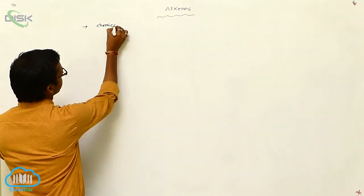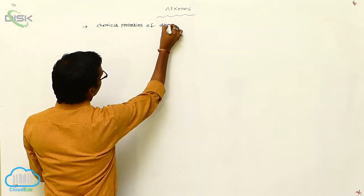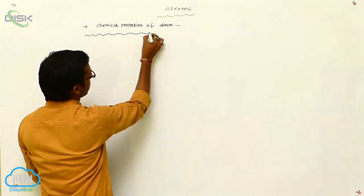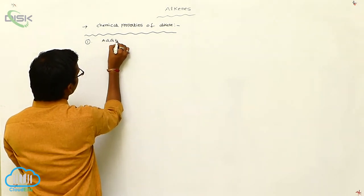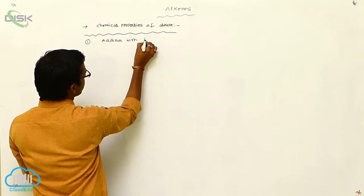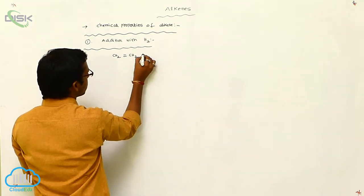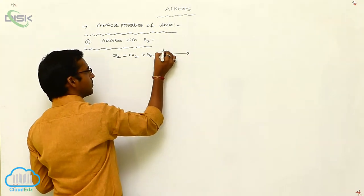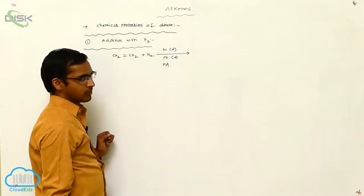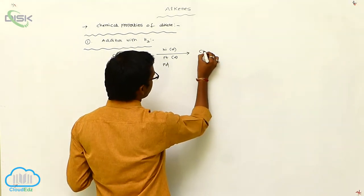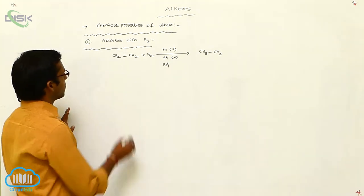Chemical properties of alkene. First one: addition with hydrogen. CH₂=CH₂ reacted with hydrogen in presence of nickel, platinum, or palladium catalysts. This unsaturated compound with a double bond is converted to a saturated compound, CH₃-CH₃. This is the first chemical property of alkene.